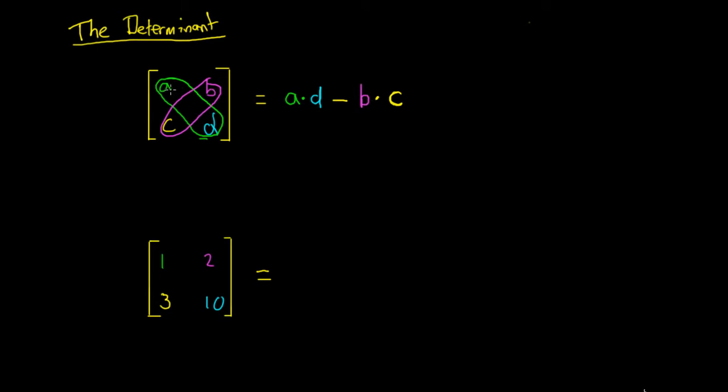So the determinant is a multiplied by d take away b multiplied by c and this is for a two by two matrix.